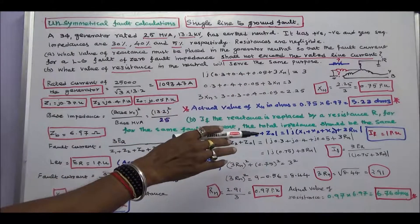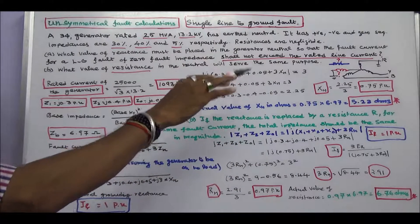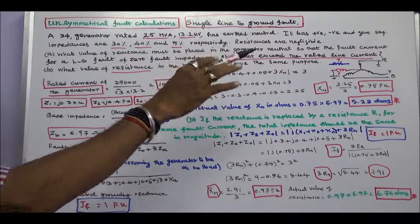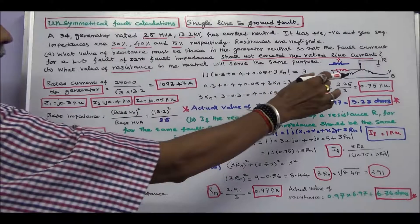This last we work out on problem. A three-phase generator rated 25 MVA, 13.2 KV has a grounded neutral.